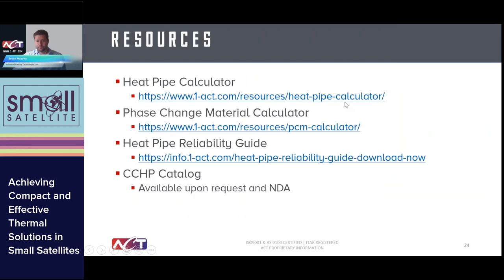We'll send this presentation out and post the recording. We have several design resources available. The heat pipe calculator is a free online design tool hosted on our website that helps you size copper-water heat pipes — it outputs a transport curve showing how much power you can move at various temperatures and diameters, a great first-order tool. We also have a phase change material calculator using high-level principles to size PCM, giving options based on various melt temperatures. If you get close using those calculators, contact us and we can help optimize your design. We also have the reliability guide available online covering the extremes testing our heat pipes have undergone.